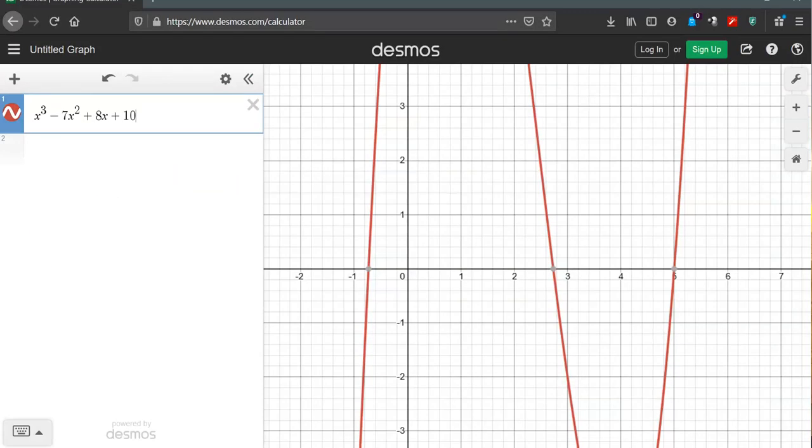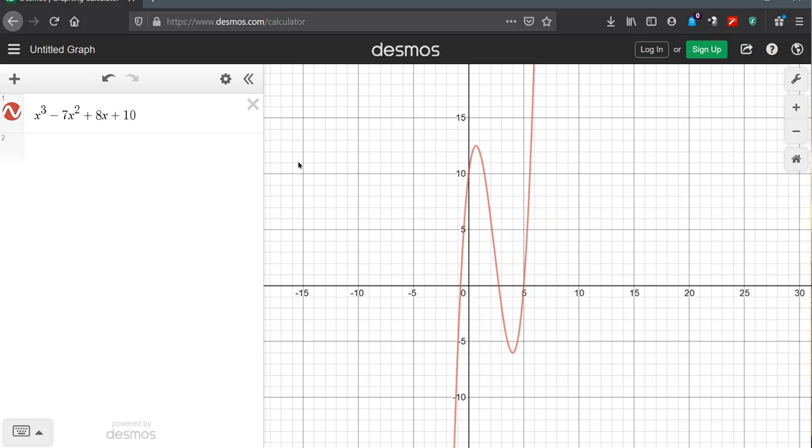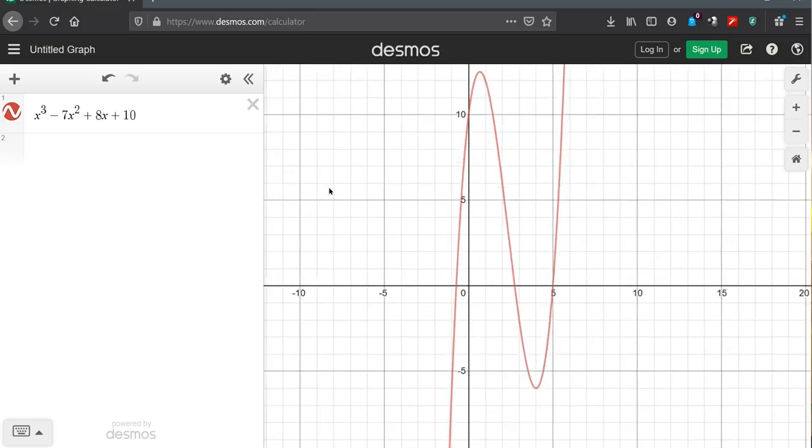I've already typed this into Desmos. Again, you go to desmos.com and then click graph to get here. So I have the equation in here, here's the graph. You can zoom out, you can see the end behavior. It's odd, so it's going to be up down, and this one goes down on the left, up on the right.